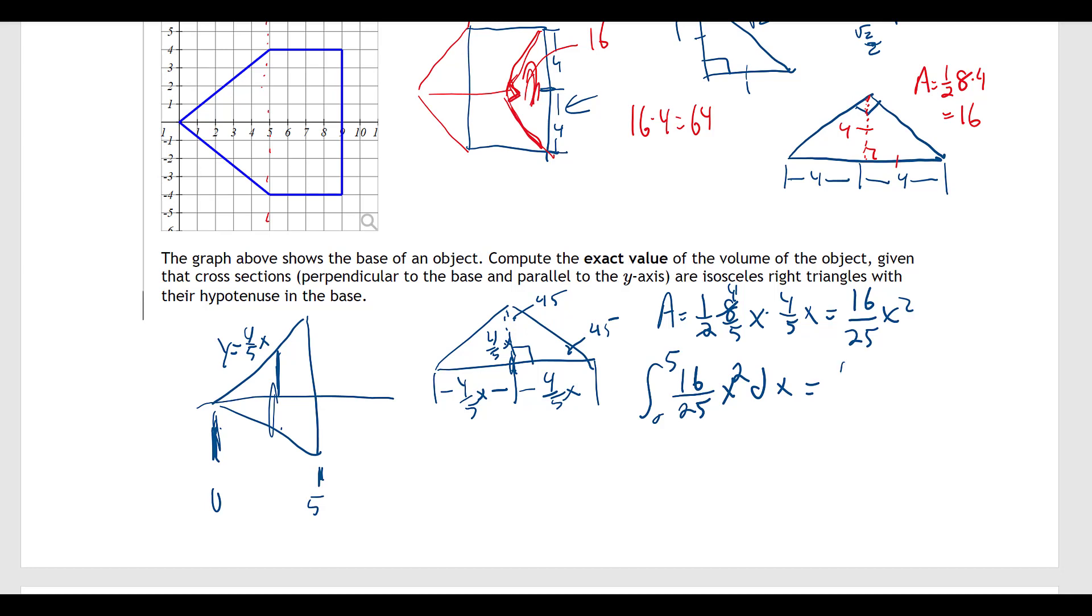So that will give us 16 over 25 x cubed over 3, from 0 to 5, and that's going to give us 16 over 25 times 5 cubed over 3, minus 0 cubed over 3.